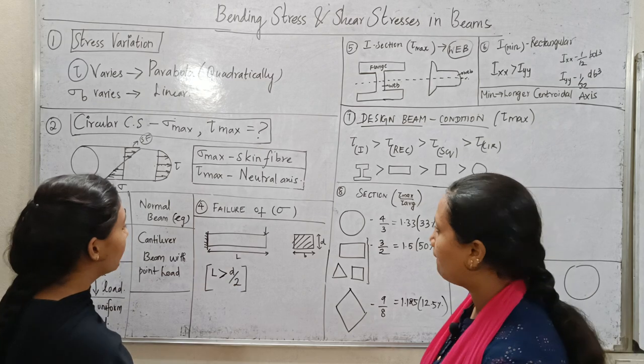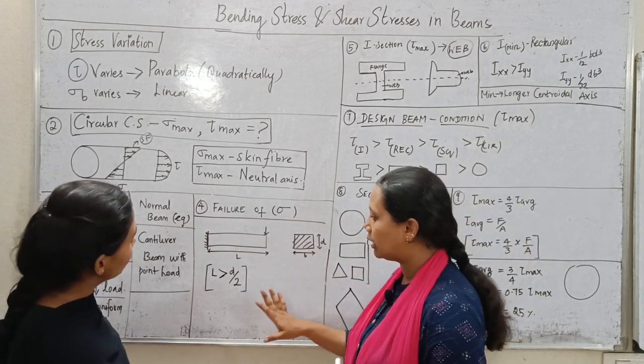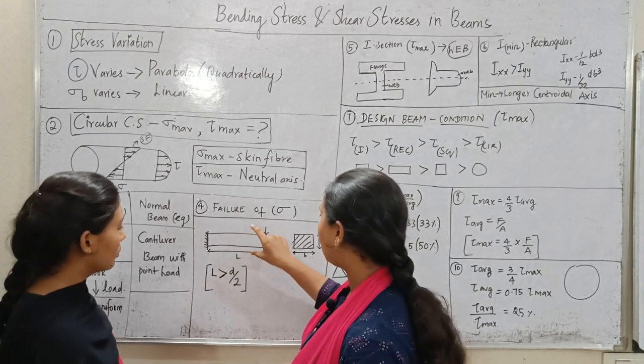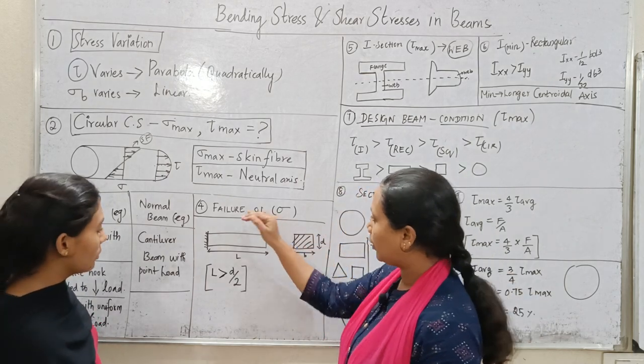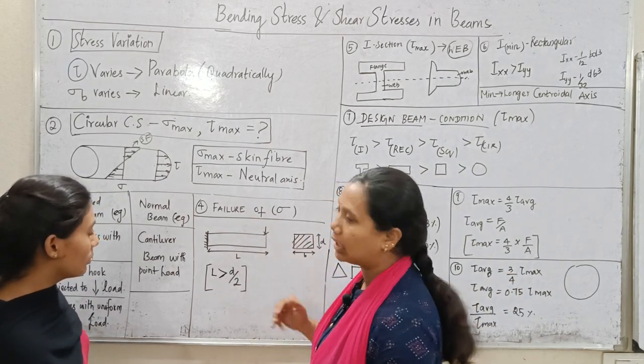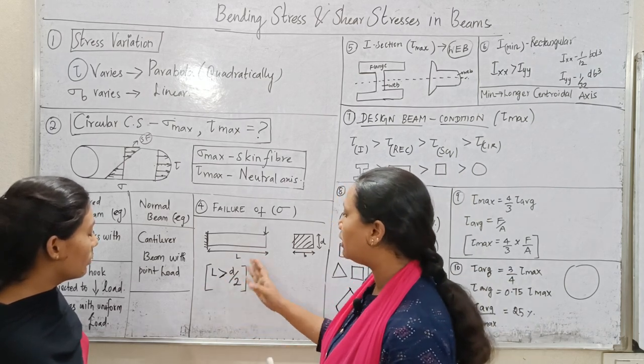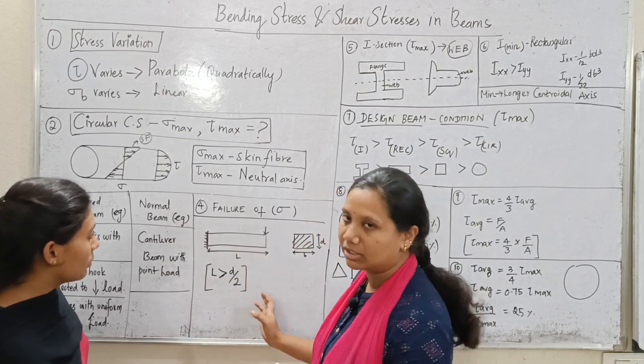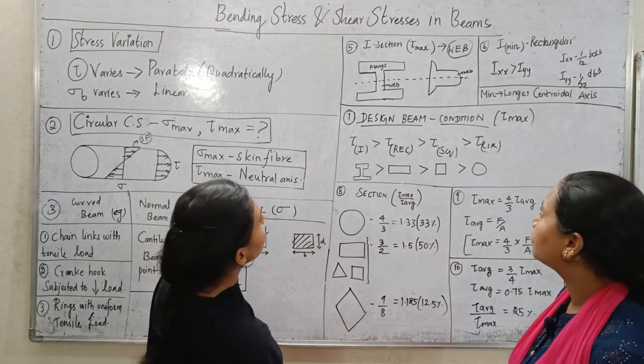Next one is failure of stress, failure of bending stress. Length and length - one rod of length, that is length is greater than the diameter of the rod. The bending stress failure is more. Length is same. The length divided by diameter is same.